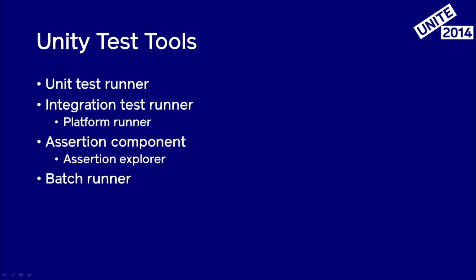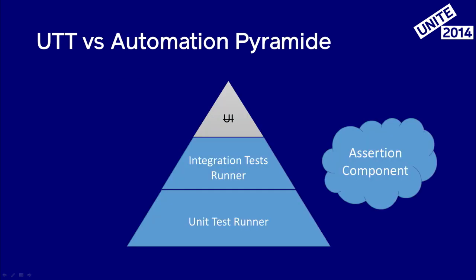So in December last year we released the Unity Test Tools. It's a package you can get from the Asset Store, and in the package you will find three main components: the unit test runner, an integration test runner that comes with a platform runner, and an assertion component. In addition to that there is a small batch runner. Each of these tools relates to a different level of the test pyramid. We cover low-level tests and integration tests, but we don't provide any framework for UI testing.